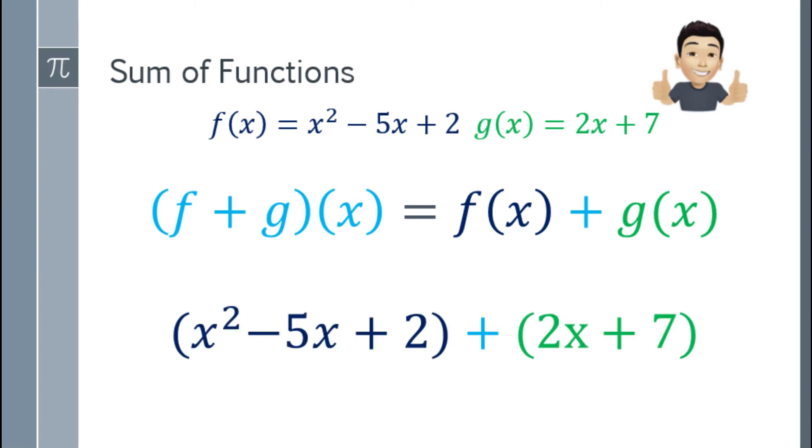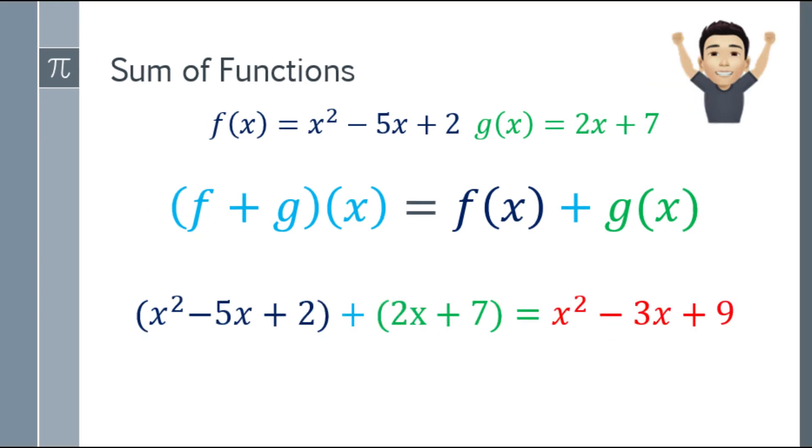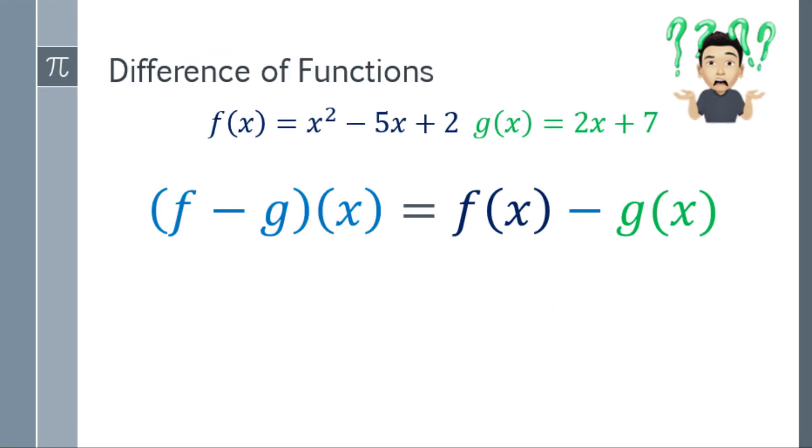So that will be x² - 5x + 2 plus the quantity 2x + 7. So ang sagot natin dyan, that will be x² - 3x + 9. So that will be the sum of the two functions. You have the function again: x² - 5x + 2 plus 2x + 7. That will be x² - 3x + 9. Ganun lang siya kasimple.